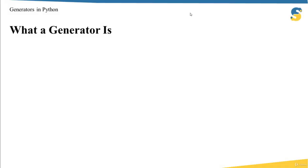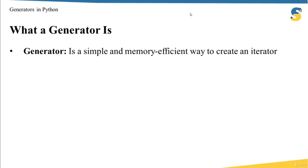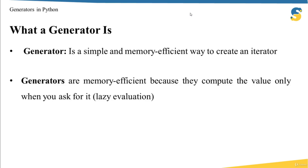A generator is a simple and memory-efficient way to create an iterator. As I mentioned in a previous lecture, an iterator is an object that respects the iteration protocol, in which the object saves its current state, and whenever we use the next function, we get the next item and the object updates its state. Generators are memory efficient because they compute the value only when you ask for it — this is known as lazy evaluation.